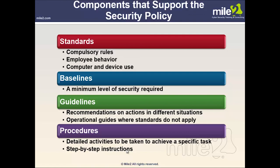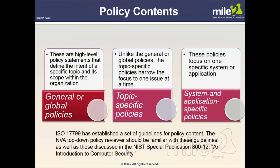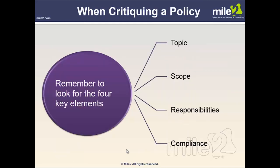Procedures are detailed, step-by-step instructions for achieving specific tasks. Policy content categories include: general/global policies — high-level statements defining intent and scope; topic-specific policies — narrowing focus to one issue at a time; and system/application-specific policies focusing on one specific system or application. The ISO 17799 guidelines for policy content and NIST Special Publication 800-12 (An Introduction to Computer Security) are important references. When critiquing policy, look for four key components: topic, scope, responsibilities, and compliance.